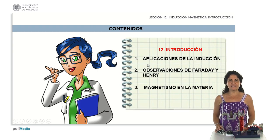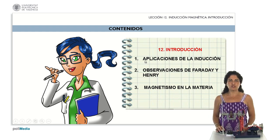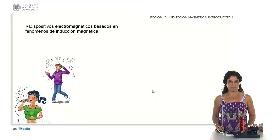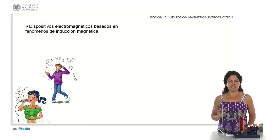Starting with the first of the lessons, what we are going to do is analyze, in our daily life, what effects and what phenomena of application of the effects of induction we have and use every day. We will analyze the observations and experiments of Faraday and Henry, who were the ones who found the key to how electric and magnetic fields are perfectly linked, and we will finish by analyzing the different magnetic properties that we find in different materials. There are many everyday phenomena in the application of all the induced currents and induction phenomena between different bodies.